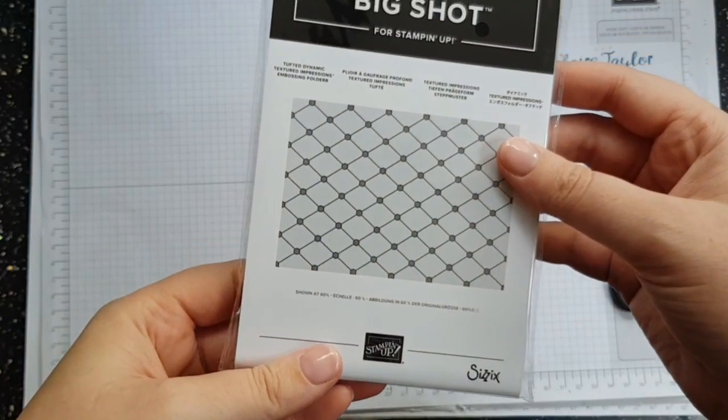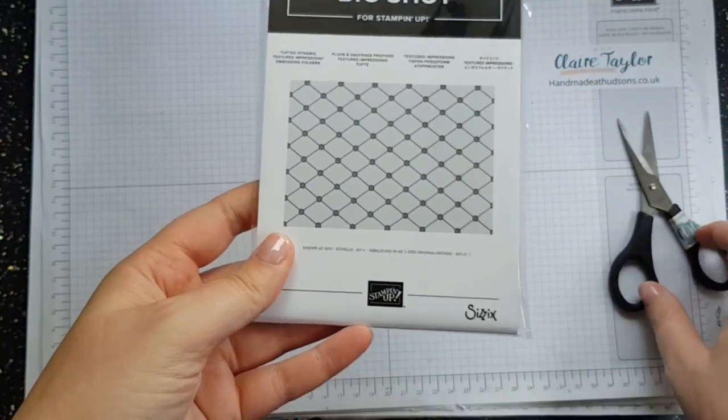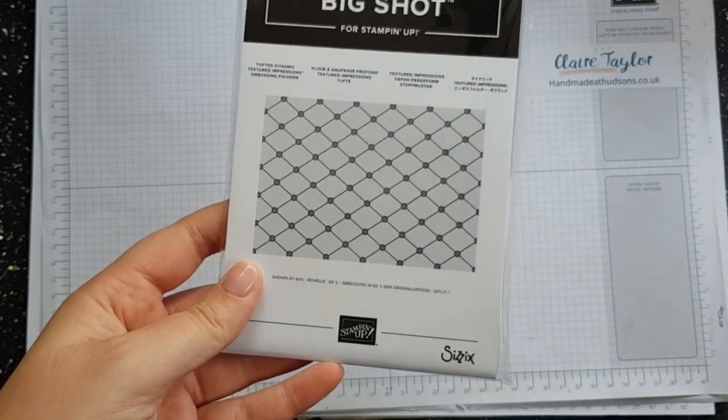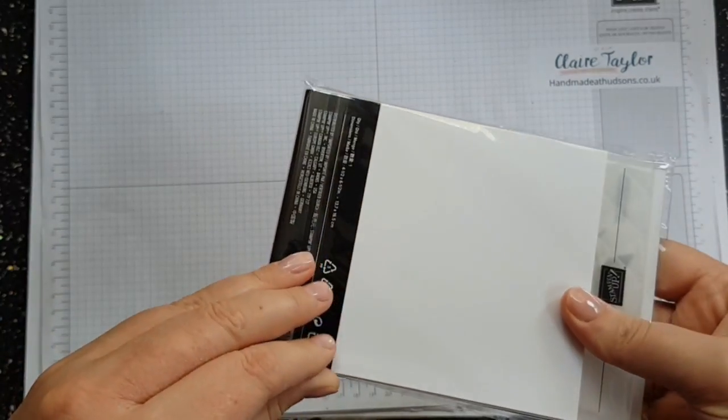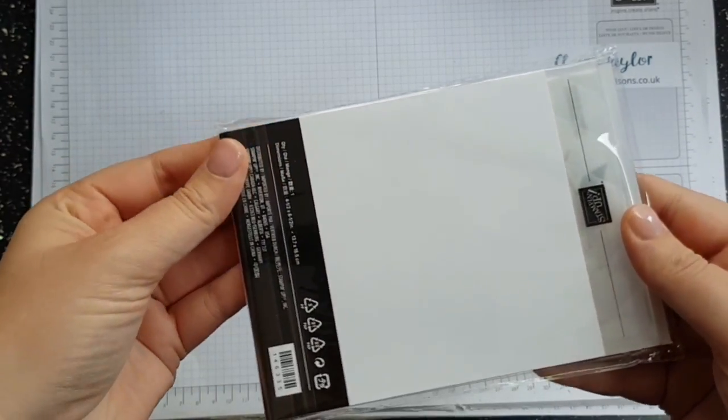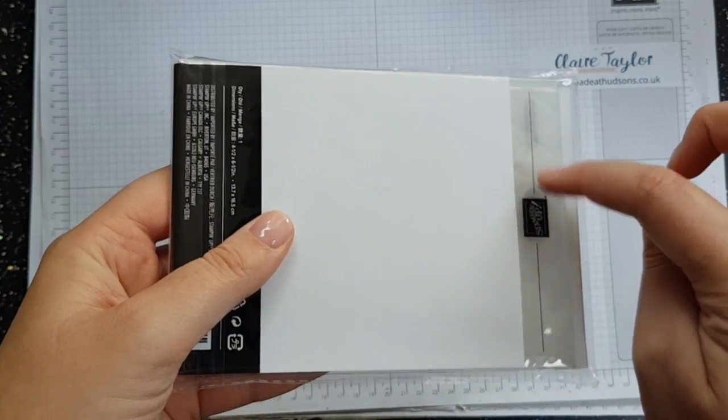And then I have got the Tufted dynamic textured embossing folder from the annual catalogue. Now I've seen so many examples using this and I was really adore it so that's what I got. So it's the one that looks like pillows so you can make like a Chanel-esque bag.